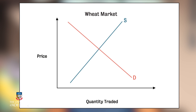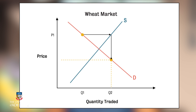Now assume that the price of wheat in year one is P1, which is above the equilibrium price for the market. If wheat farmers use this price to decide how much to produce in year two, they will produce amount Q2. Consumers are willing to purchase Q2 at price P2. Based on price P2, producers decide to produce Q3 in year three. In year three, consumers are willing to pay P3 for that amount of wheat.